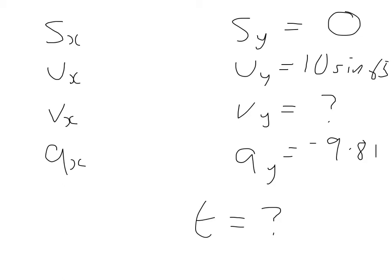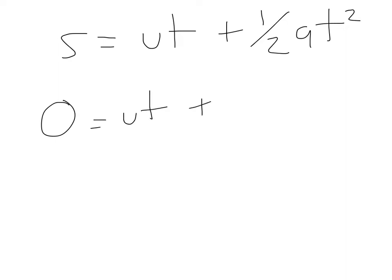So now we need to know what equation do we use for this. In a lot of cases you are going to be using the same equation which is a simple one which is S equals UT plus half AT squared. So let's look at that now. S equals UT plus one half AT squared.